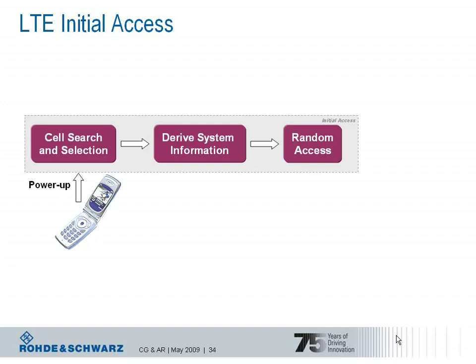After the initial access procedure, the terminal is able to receive and transmit its user data. Before we look at each of these steps separately, we need to talk about the physical signals and channels used in the downlink.